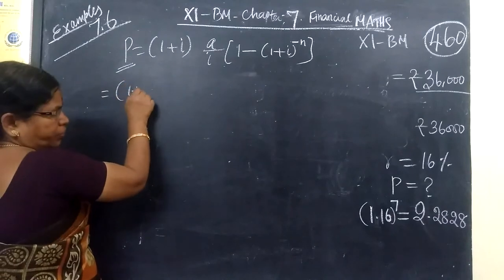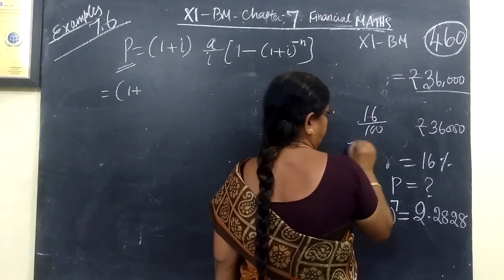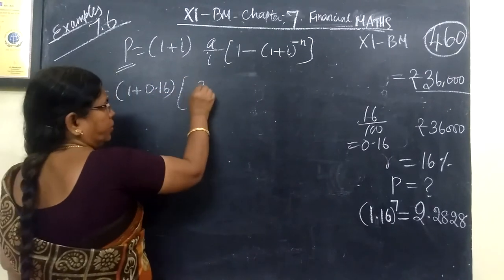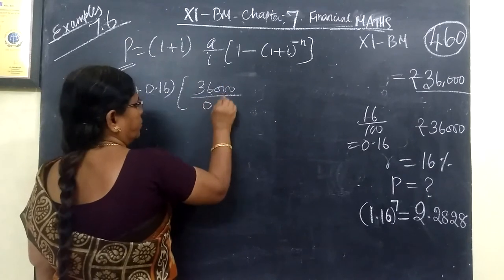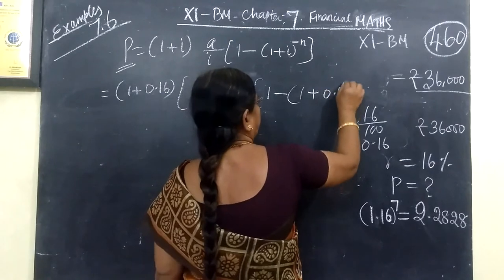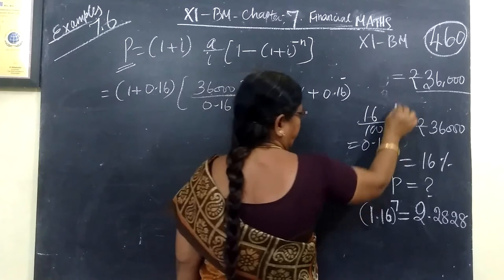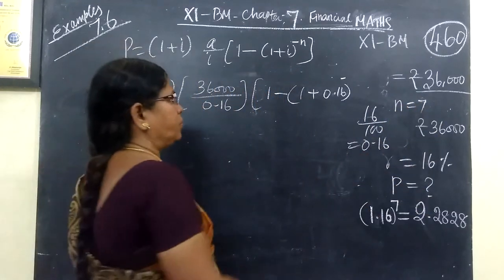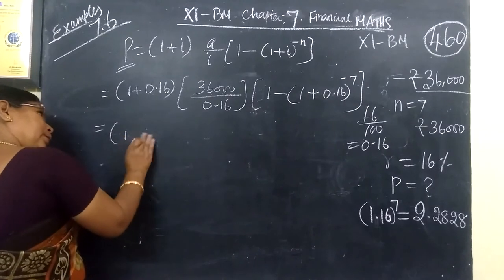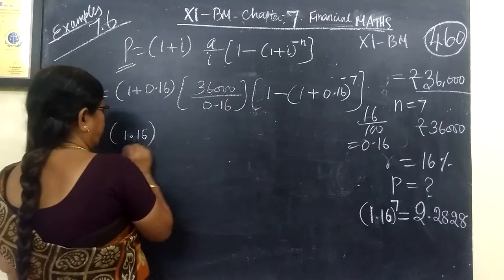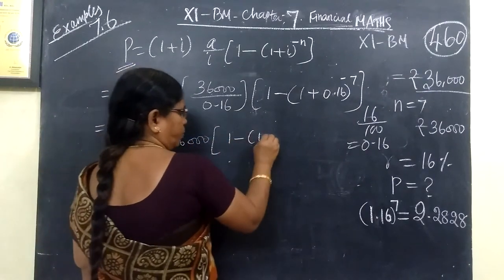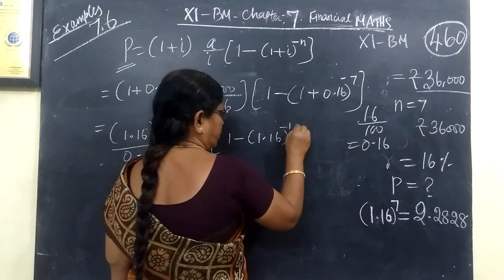Then A, 36,000, by i, 0.16, then 1 minus (1 plus i) 0.16 to the power minus n. Number of periods n equal to 7, because 7 installments, so n equal to 7. So that is equal to 1 plus, so 1.16, then by 0.16, then 36,000, then 1 minus 1.16 to the power minus 7.